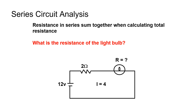Remember, resistances in series sum together when calculating total resistance. What is the resistance of the lightbulb in this schematic? Total resistance equals voltage divided by current, so total resistance equals 12 volts divided by 4 amps, or 3 ohms. If the total resistance equals 3 ohms and the value of one of the two resistors is given as 2 ohms, then the remaining resistor must equal 1 ohm.